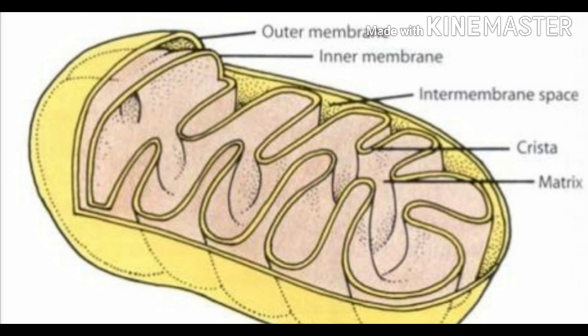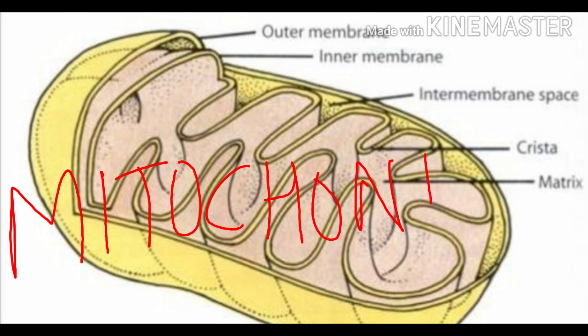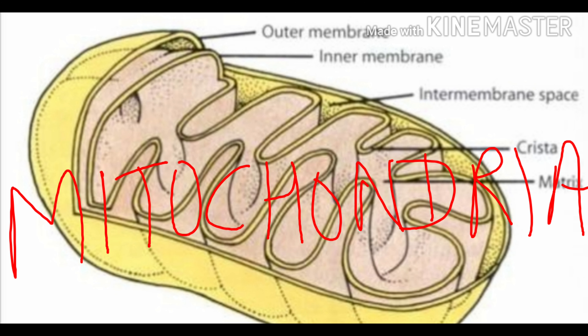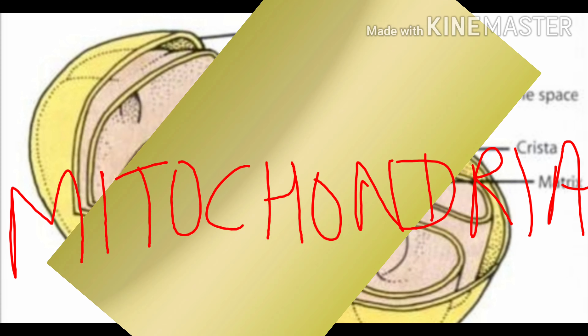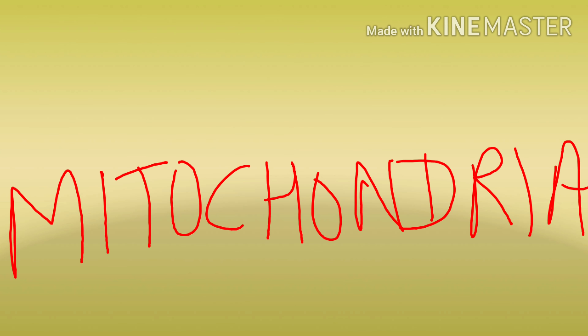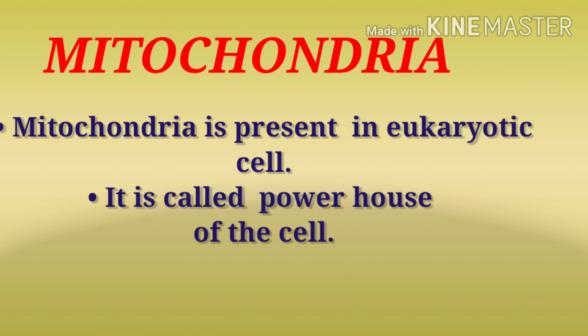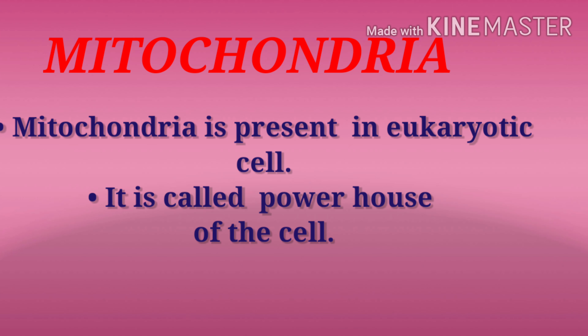In this video, we will discuss about the mitochondria. As you know, mitochondria is a very important cell organelle. It is mainly present in eukaryotic cells and it is also called the powerhouse of the cell. So in this video we will mainly discuss the structure of the mitochondria and why it is called the powerhouse of the cell. So let's start.